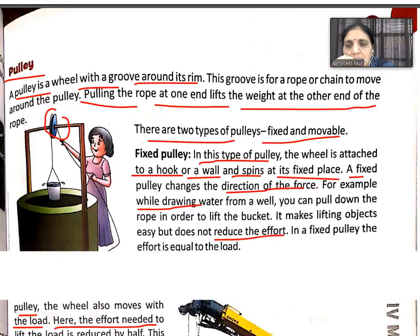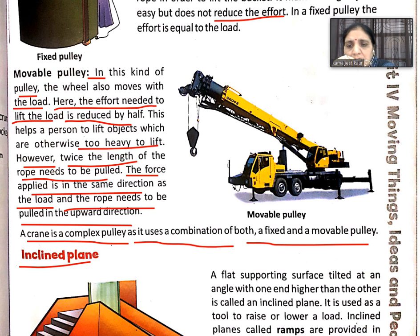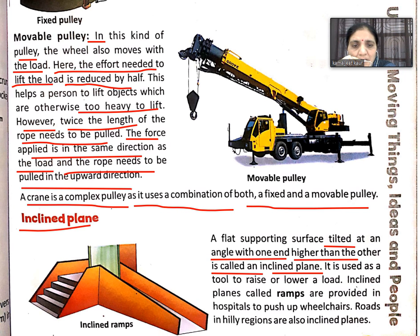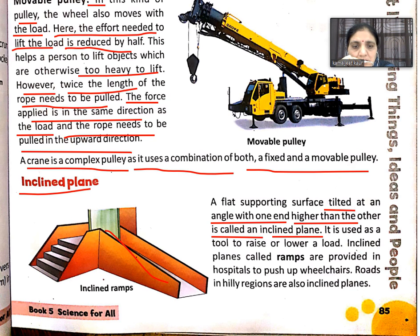There are three types of lever, pulley, and machine — these have been explained. Now we start with the inclined plane. A flat supporting surface tilted at an angle with one end higher than the other is called an inclined plane. It is used as a tool to raise or lower a load.